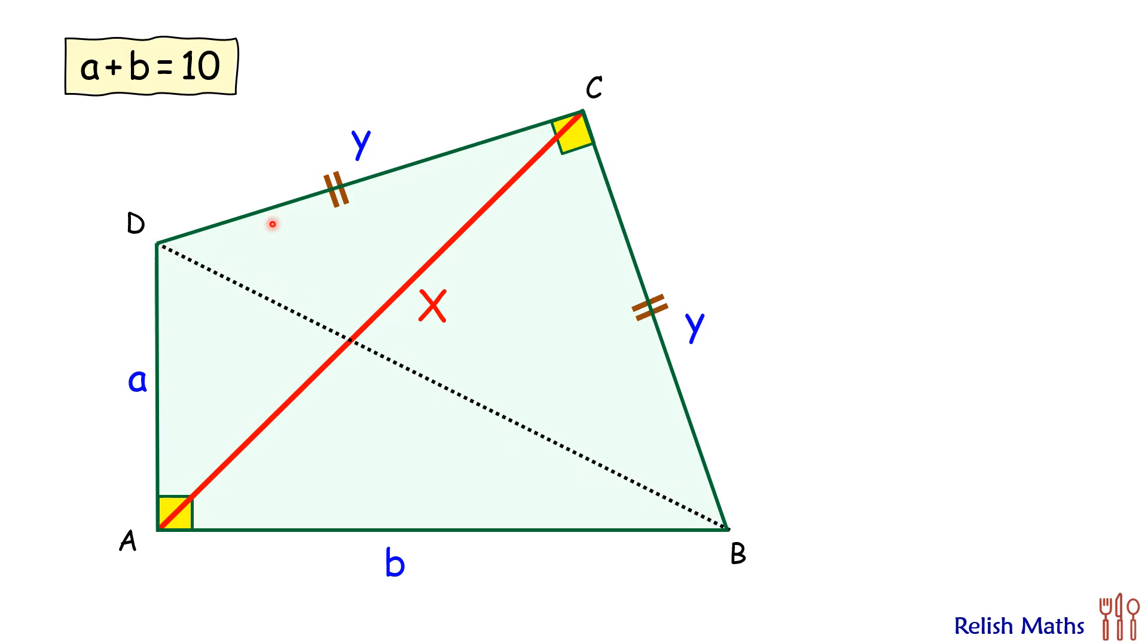Now this triangle DCB is a right angle isosceles triangle. Finding DB, the hypotenuse, by Pythagoras theorem, we get DB as root 2y.